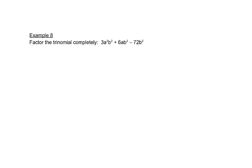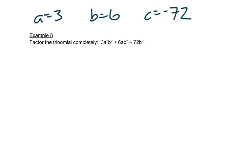Looking at this example, we can see that A is 3, B is 6, and C is negative 72. We need to look for a greatest common factor first, and they all have a 3, so we write a 3 out in front. They also all have a B squared, so we're going to write B squared out in front as well.